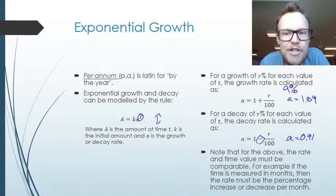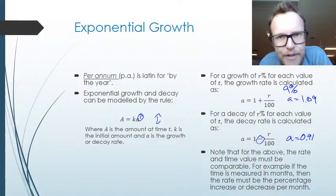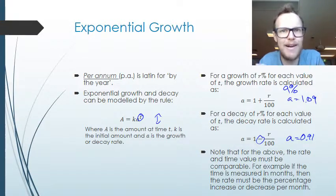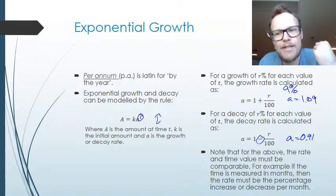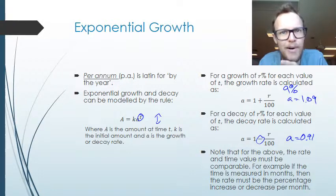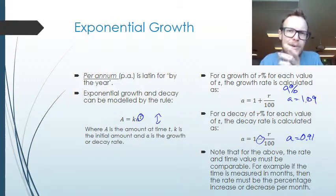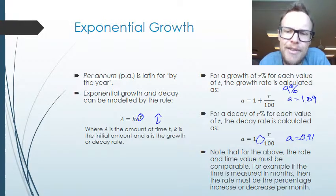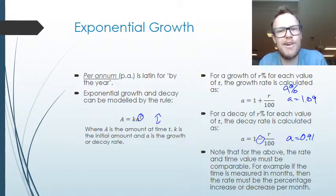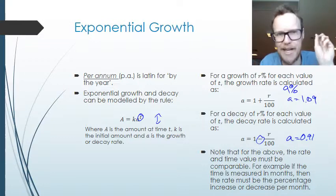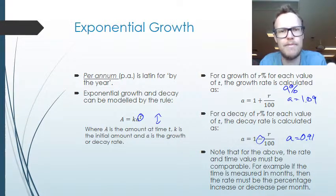If the time is measured in months, the percentage must be increase or decrease per month. If you're given the percentage as per annum but the time values are in months, you need to convert one or the other. It's probably easiest to keep time in months but divide the percentage by 12. So a 9% per annum rate becomes 9% divided by 12 to find the percentage increase per month — they need to be in the same units.